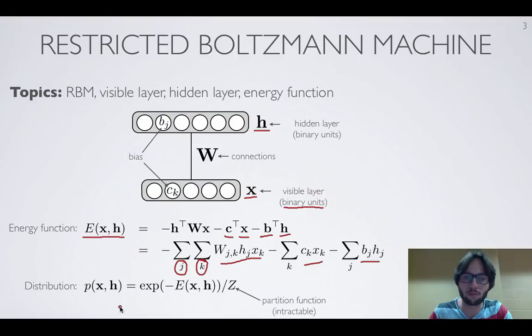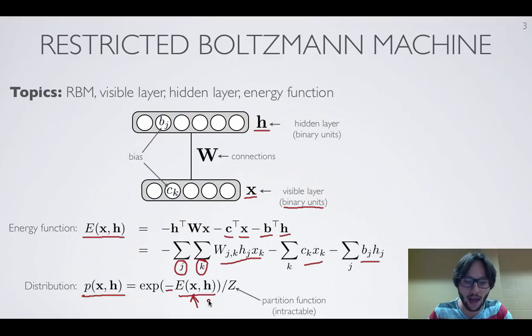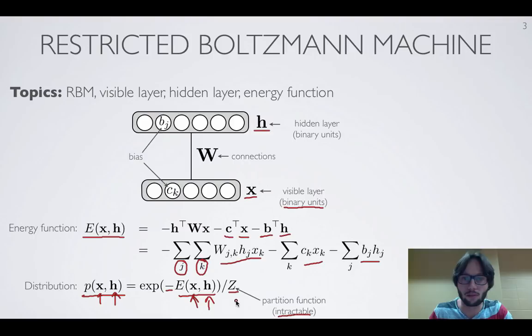To obtain probabilities from this energy function, much like in a physical system, the probability of observing a particular configuration is the exponential of minus the energy associated with x and h, divided by a normalization constant or partition function. Unfortunately, for a restricted Boltzmann machine this partition function is intractable — it's the sum of the numerator over all values of x and h, which are binary, so there's an exponential number of configurations. We'll see how to address this in subsequent videos.